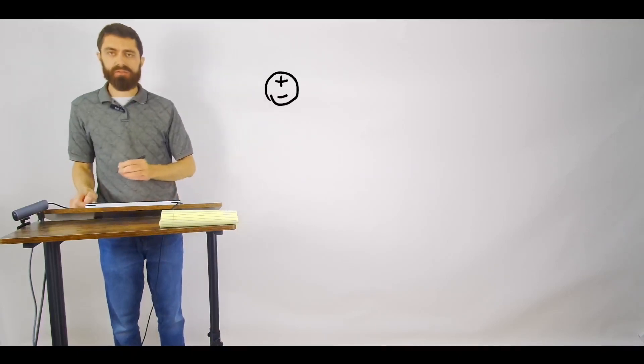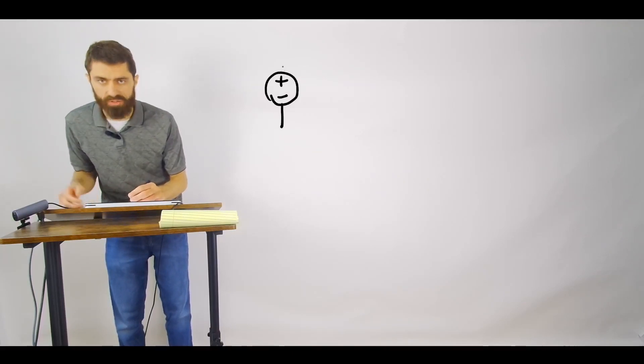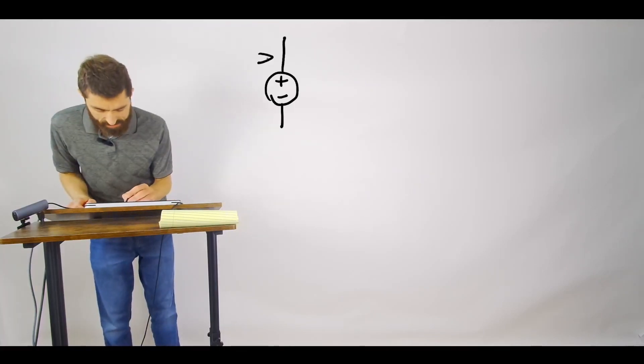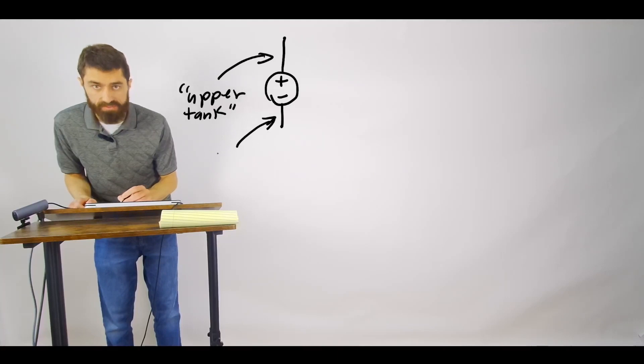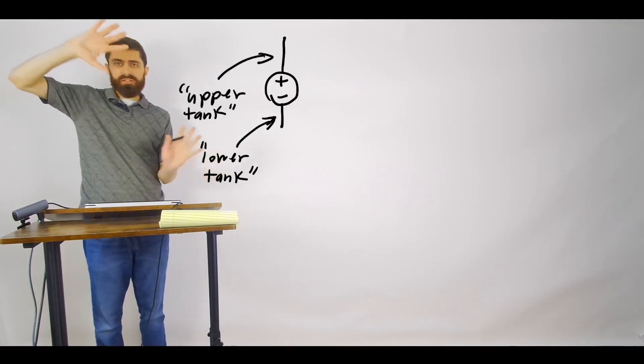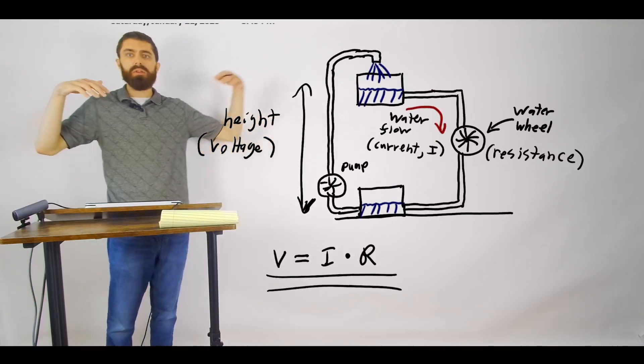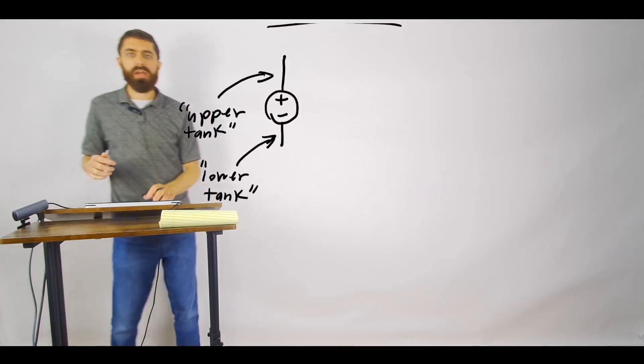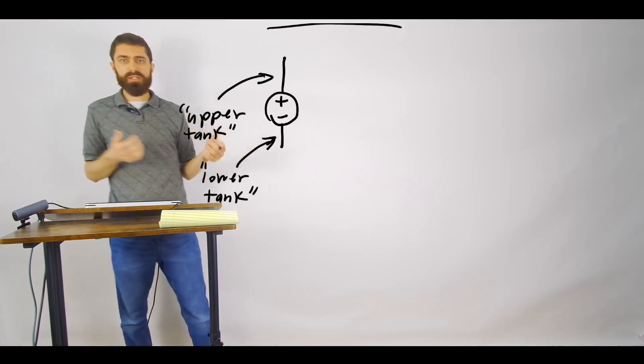So typically the symbol that we use, a schematic symbol for a battery or voltage source, this is more of a generic voltage source, is just a circle and a plus and minus. So this is like the upper tank. And then the minus side is like the lower tank. And so just like when you have two tanks of different heights, if you connect something across these two tanks like the water wheel with pipes, then you'll get some water flow. In the same way if you connect an electrical component like maybe a light bulb or an LED or a motor or something like that, then you will get a flow of electrical current or a flow of electrons.